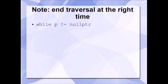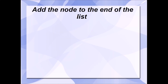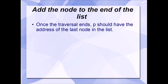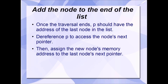So in our original example, the original code used while P is not equal to null pointer, which caused traversal to end with P equaling null — this is what we want to avoid. Instead, what we want is while P->next is not equal to null. The traversal will stop one iteration sooner, leaving P containing the memory address of the last node of the list. Finally, once the traversal has ended, P will contain the memory address of the last node of the list. Now it's a simple matter of adding our new node to the end of the list by dereferencing P to access the node's next pointer, then assigning the new node's memory address to the last node's next pointer.